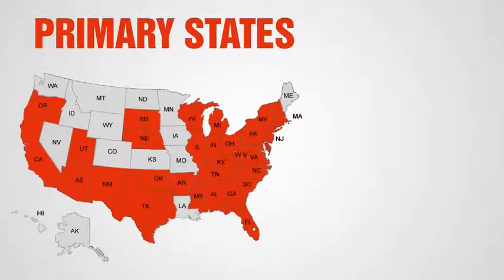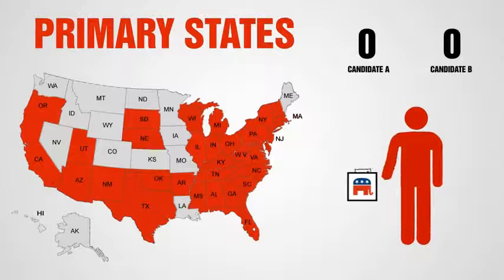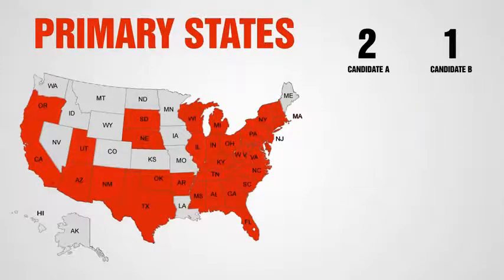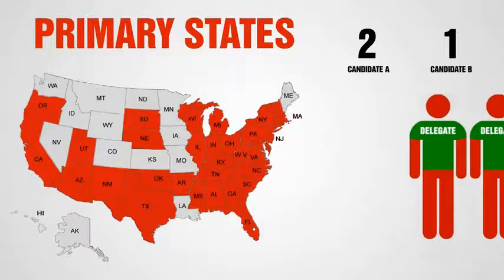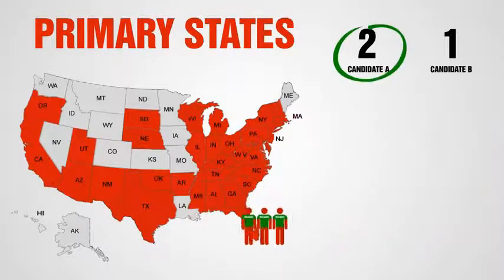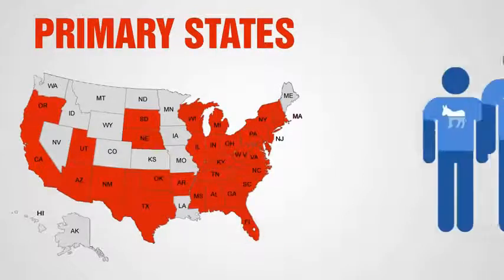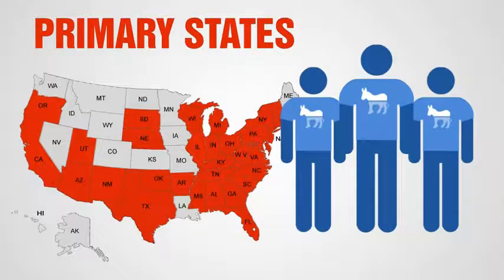Let's look at the primary states first. If you live in one of these states, you're in a primary state. In a primary election, registered voters may participate in choosing their candidate by voting in a secret ballot, as in a general election. The specific rules and methods for voting for the Republican presidential nominee vary among states, but in each case your state will send delegates to the national convention to support the candidate that gets the most votes in the primary.